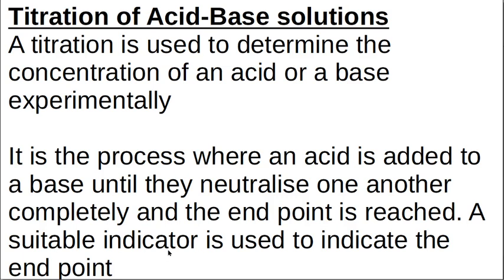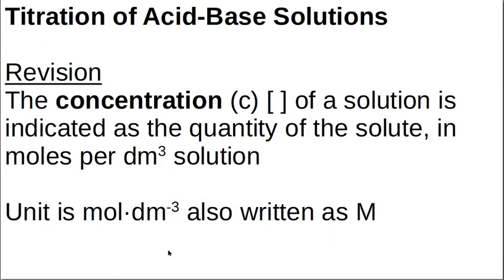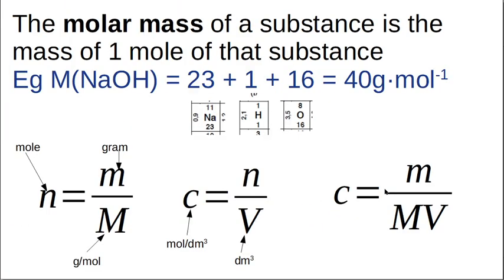The indicator is going to change color at the end point, and it's your job to know which indicator to use. For the calculations we need some revision. The concentration, which we call little c and represent with square brackets, is the quantity of the solute in moles per cubic decimetre of solution. Sometimes they ask you this definition. We can write it as mol·dm⁻³ or as big M — so 0.1 M means 0.1 mol·dm⁻³.